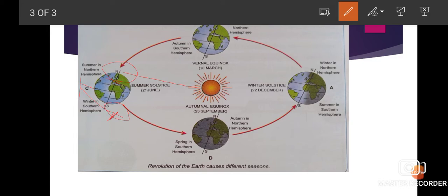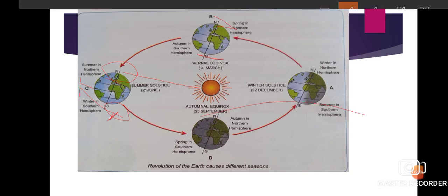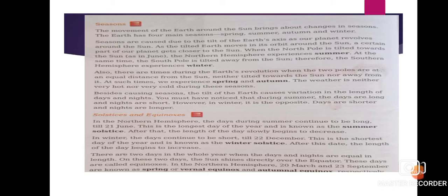When both the north pole and the south pole are at an equal distance from the sun — tilted neither towards the sun nor away — at such time we experience spring and autumn. Here you can see both the south pole and north pole are tilted at equal distance; no one is near or far. So what happens at that time: we experience spring and autumn, and the weather is neither very hot nor very cold during this season.